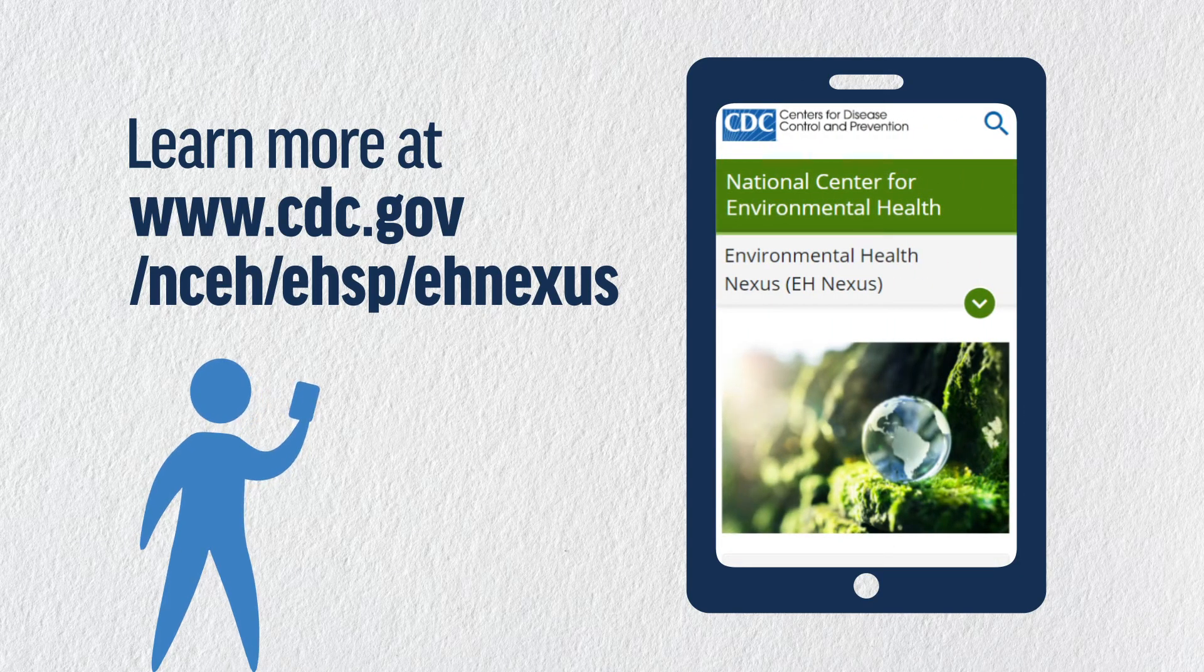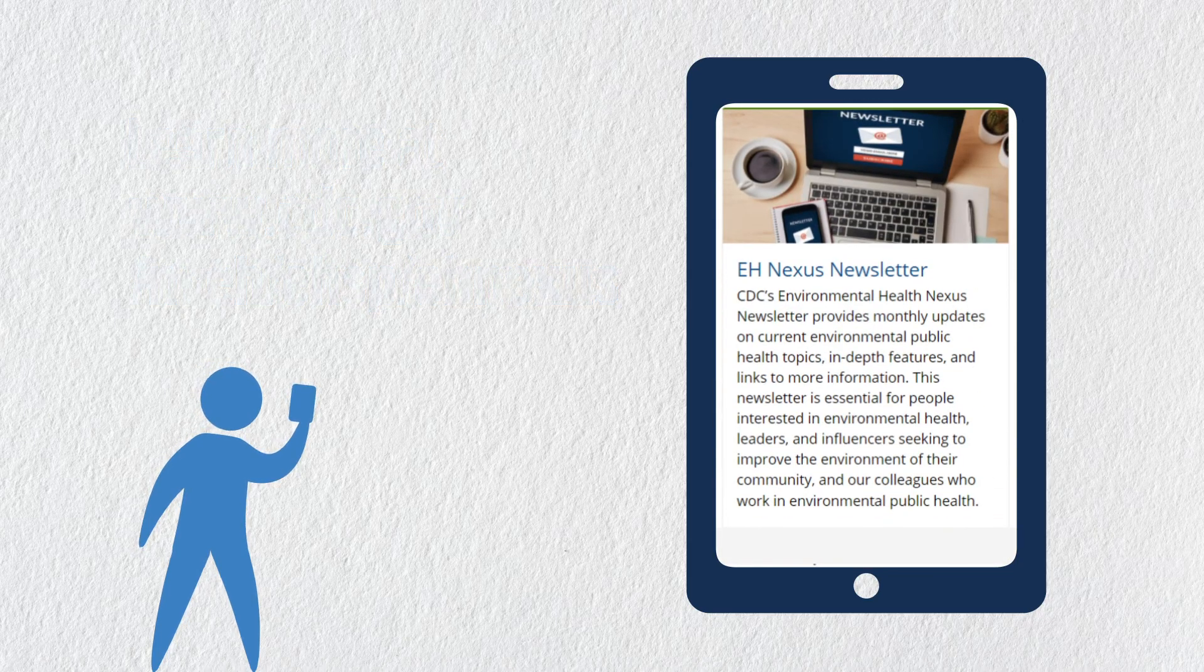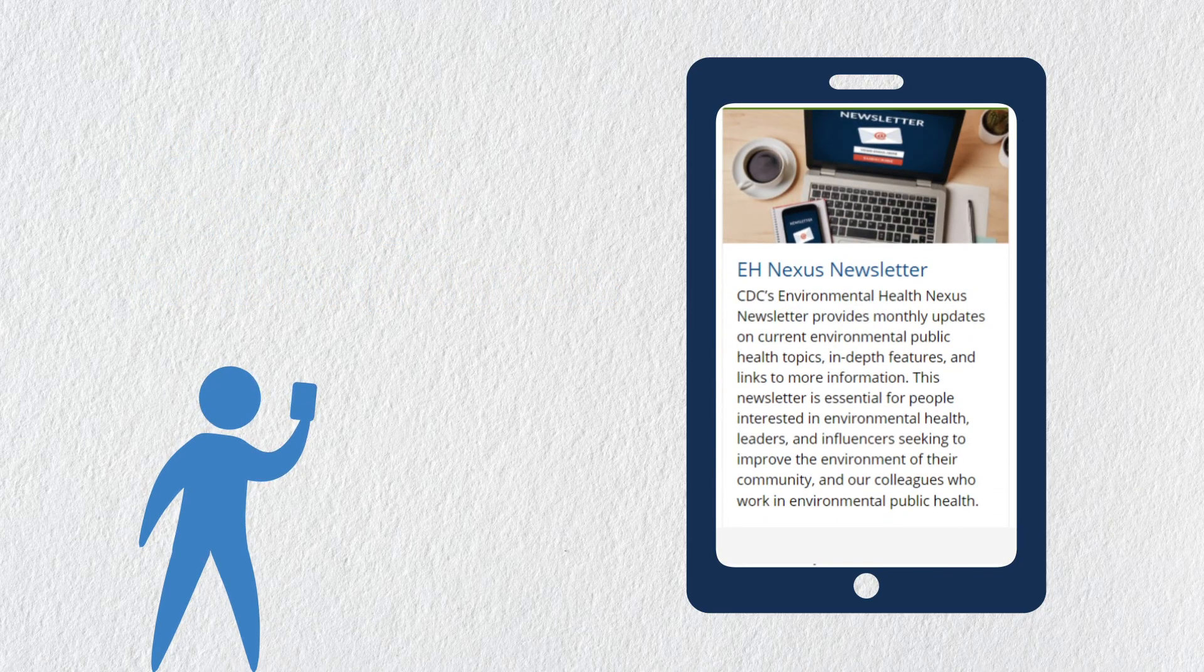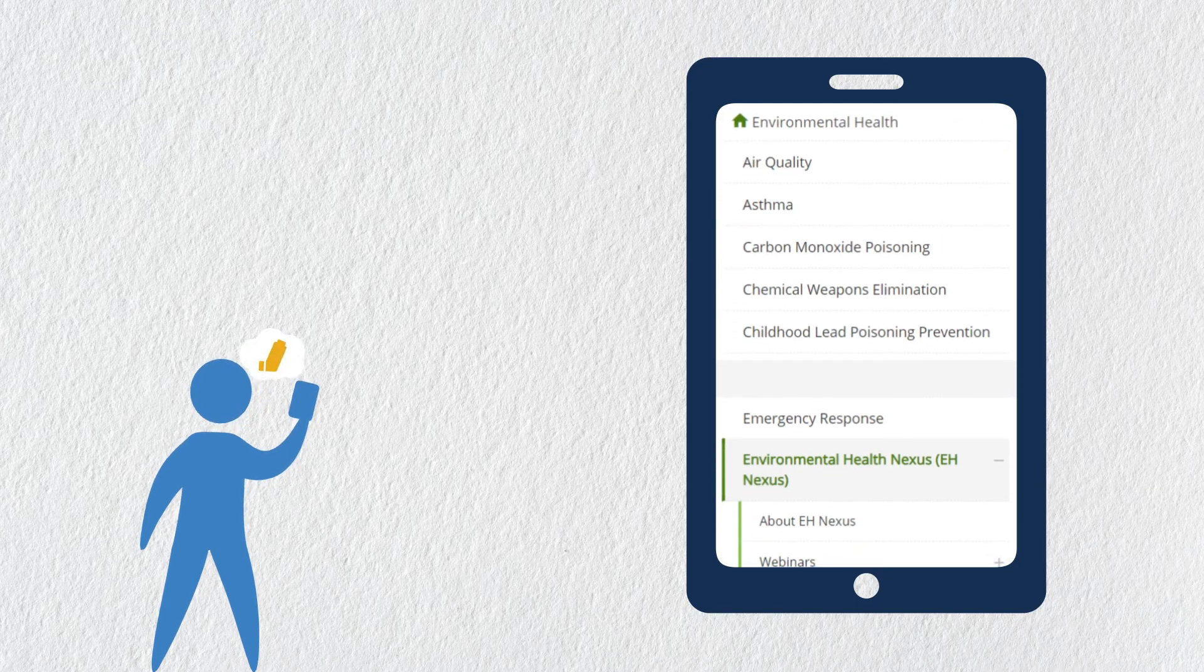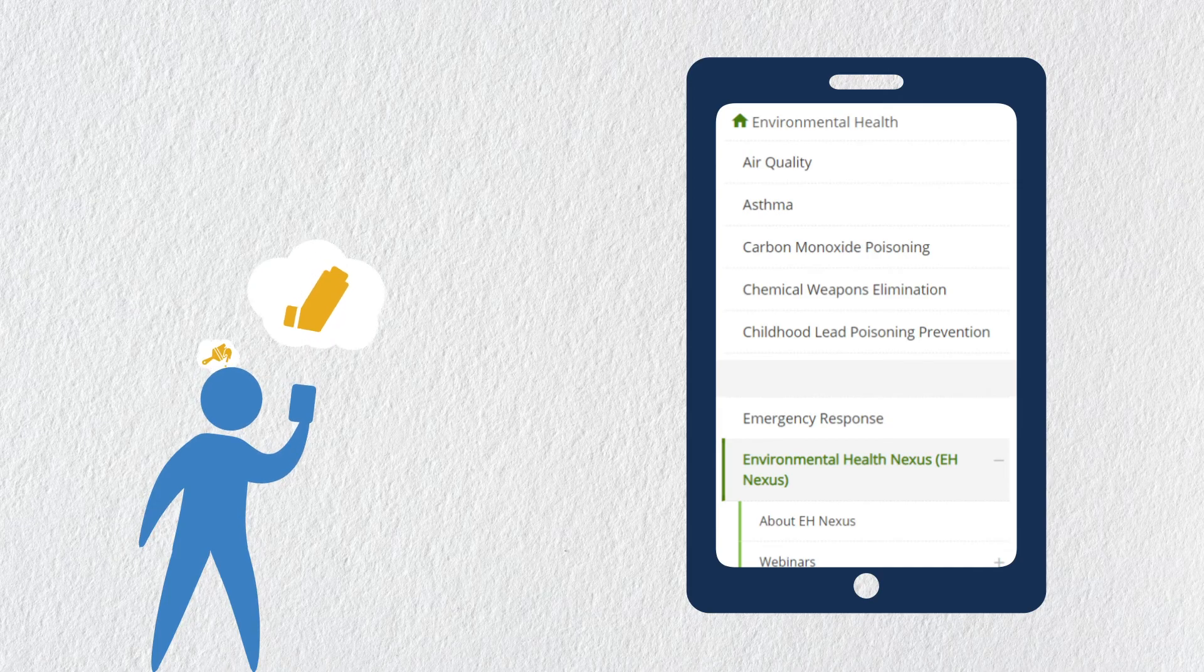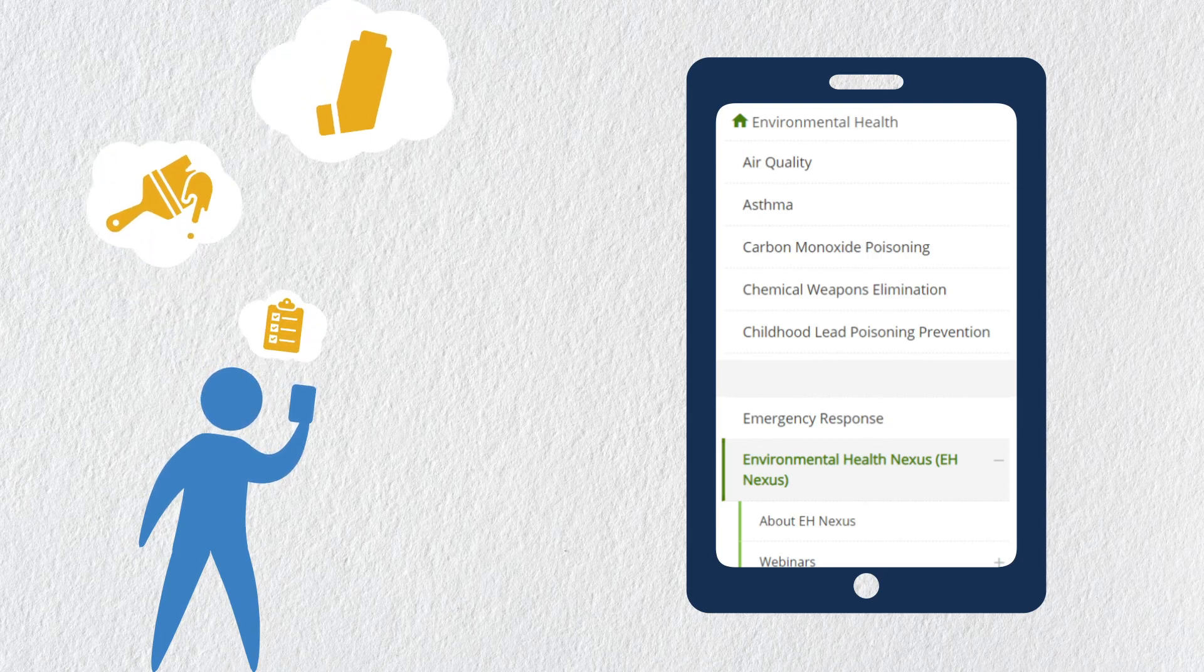CDC's National Center for Environmental Health offers tools and information to help you protect yourself from everyday environmental health risks. You can find resources like asthma action plans, tips on preventing lead poisoning, emergency plans to prepare for natural disasters, and more.